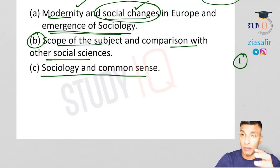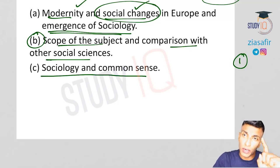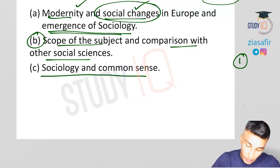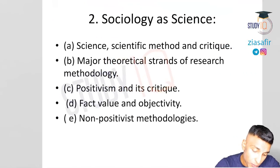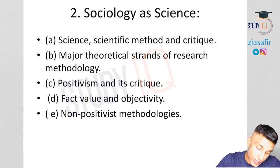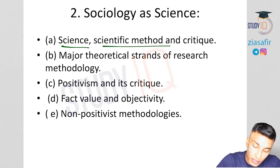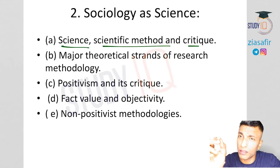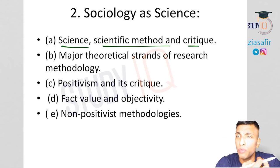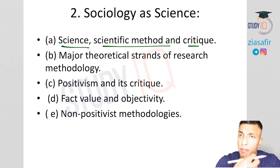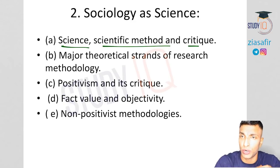You will definitely get one question from this first chapter, and possibly two — one short note and one long question. Moving to the second chapter: science, scientific methods, and critique. The key question is whether sociology is a science. Initial sociologists tried to model sociology on natural sciences, which gave it legitimacy when it was new and not widely accepted.